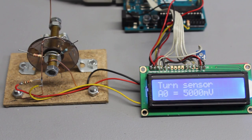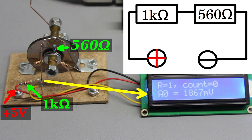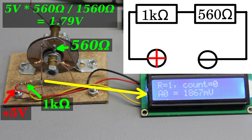If the switch gets closed through the 560 ohms resistor, a voltage divider composed of a 1kΩ and a 560 ohms resistor at 5V input voltage is formed. In theory we get a voltage drop of 1.79V across the 560 ohms resistor. The reading is 1867mV, which is within the observational error.